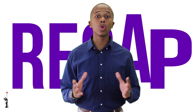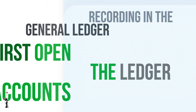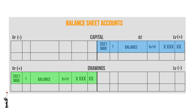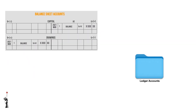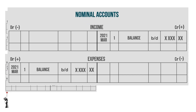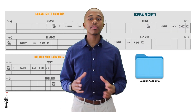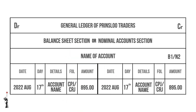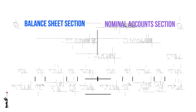Before we start with an example, let's recap on a few concepts. We must remember to open the general ledger accounts first. The opening balance from the previous month must be recorded first. These accounts should be posted in a specific order: firstly the balance sheet section, and then the nominal account section.